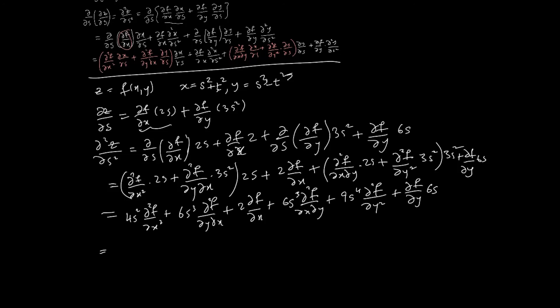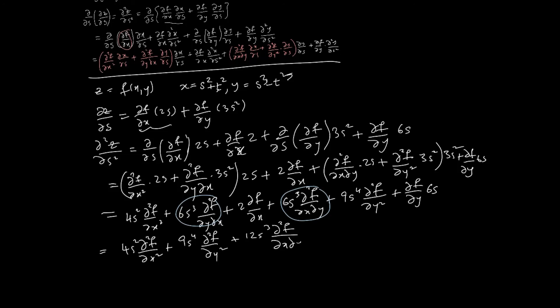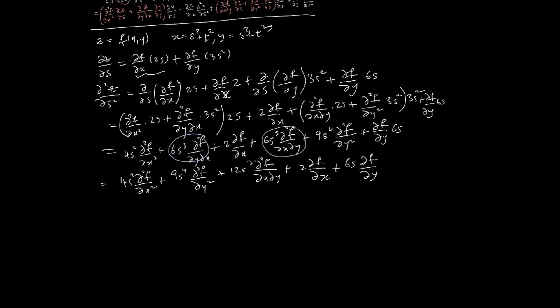We can see there are common terms. By Clairaut's theorem — given the condition of continuity — fxy and fyx are equal. So the two mixed partial terms combine: 6s³ + 6s³ = 12s³. The final answer is: 4s² · (∂²f/∂x²) + 12s³ · (∂²f/∂x∂y) + 9s⁴ · (∂²f/∂y²) + 2·(∂f/∂x) + 6s · (∂f/∂y). It does look complicated, but I hope you have a reasonable idea of how this is done. Thank you.